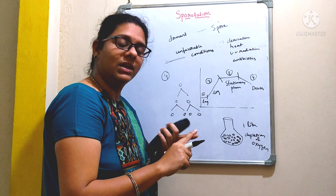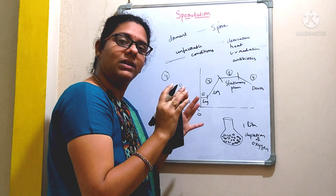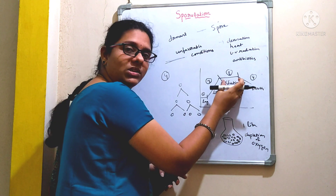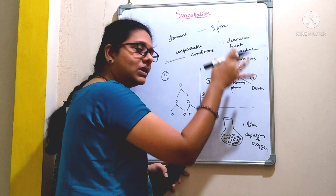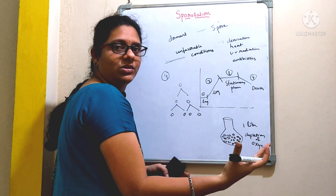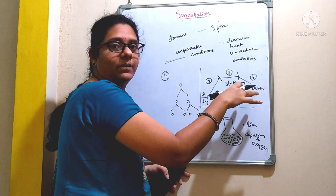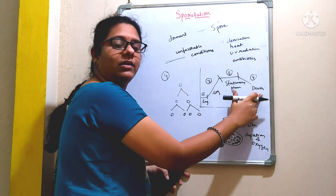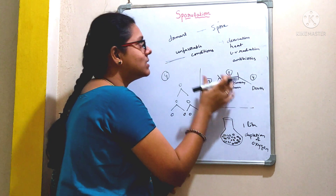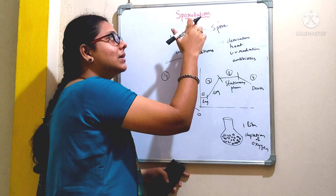The unfavorable conditions are: depletion of nutrients, depletion of oxygen, limited space, and accumulation of toxic waste. All these are unfavorable conditions which don't support the growth of bacteria. In the stationary phase, the live bacteria equals the dead bacteria. The older cells start dying due to depletion of nutrients — there is no energy to carry out metabolic activities and they are not capable of undergoing division. During this stationary phase, or at the end of the log phase, the bacteria will form a dormant structure called spore, and this formation of spore is nothing but sporulation.